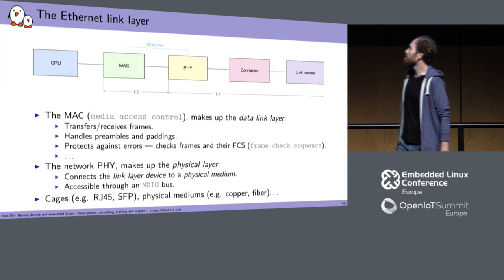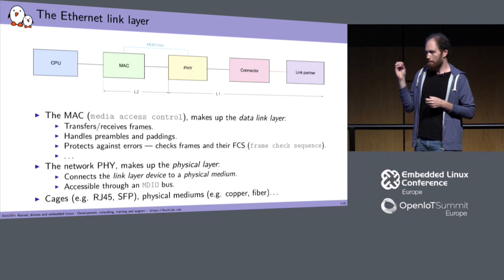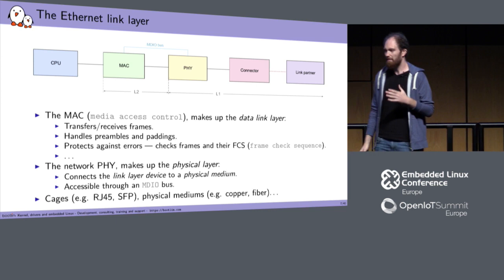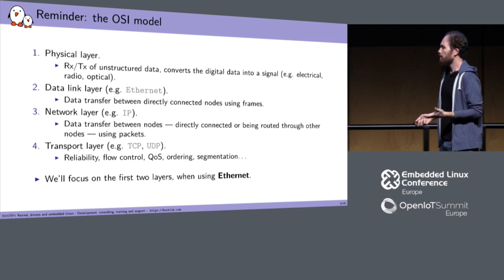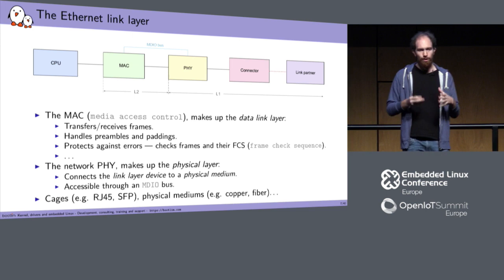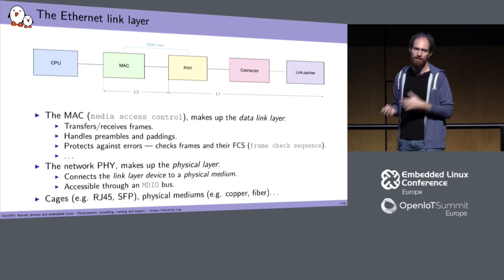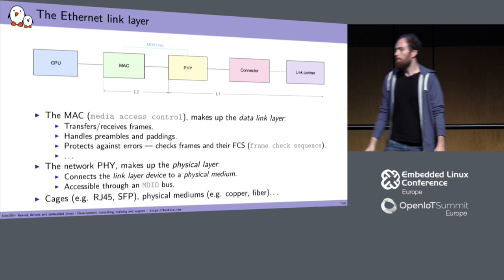Looking at what an Ethernet link can look like: you want to send data from a CPU to a link partner, which is a remote device. You have a few elements on this link. The first is the MAC — Media Access Control — responsible for handling everything linked to L2 of the OSI model, i.e., the data link layer. Then you have the network PHY, which converts the digital signal into an electrical signal and handles L1, the physical layer. There is a clear separation between L2 and L1 in the design of the Ethernet link.